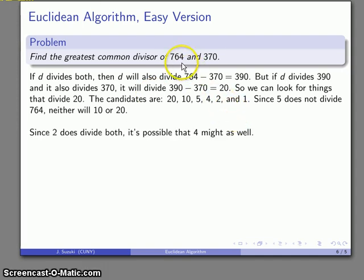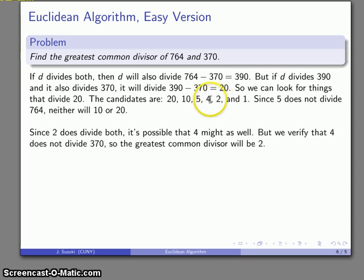Now, we look at our primes on the list. 2 does divide both numbers. So that means 2 does divide, so it is a common divisor, and 4 is the case that we have to look at fairly closely, because 4 might work, but again, through direct division, we can find that 4 does not divide 370, so 4 fails. 5, 10, 20 also fail. 2 is the last prime standing, and so 2 is the greatest common divisor.